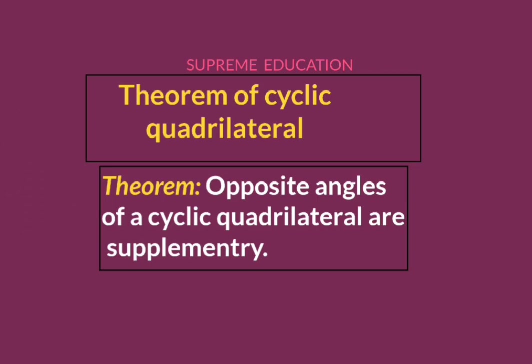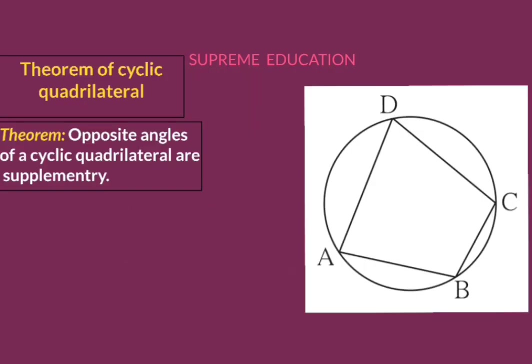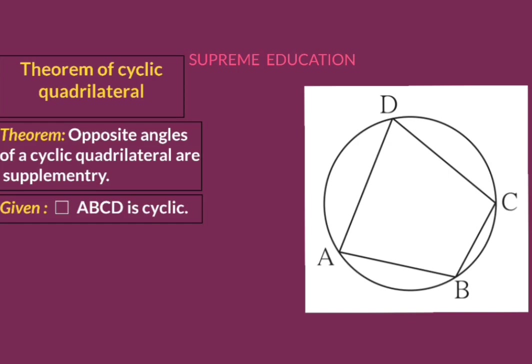The statement of this theorem is: opposite angles of a cyclic quadrilateral are supplementary. The first step is to draw a proper diagram. Here we draw cyclic quadrilateral ABCD, in which all four vertices — point A, point B, point C, and point D — lie on the same circle. Given: quadrilateral ABCD is a cyclic quadrilateral.